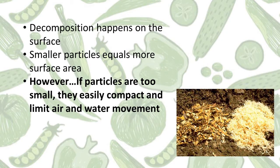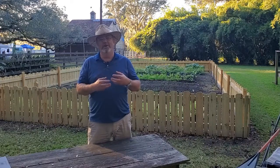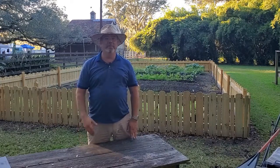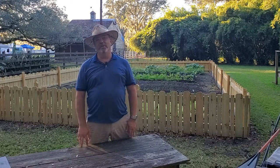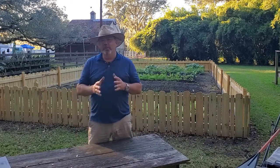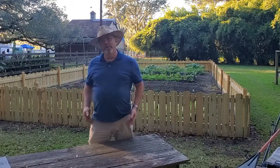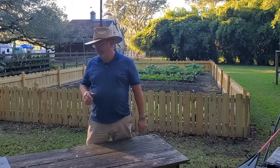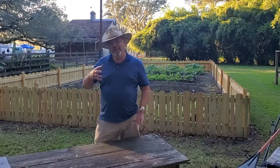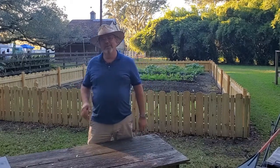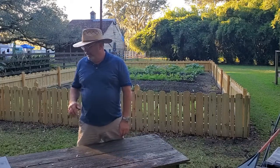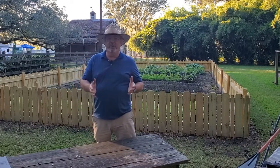But you have to watch it, because if particles are too small they can compact together really tightly and then air and water can't get in — and that could be a problem. Sawdust, for example: if you get a lot of sawdust, you can't just put it in the compost directly without mixing it up. You have to spread it and mix it in with the other things.